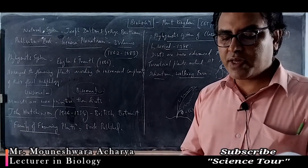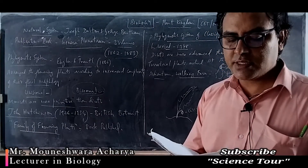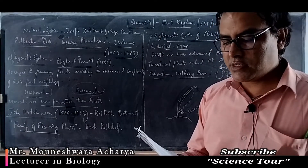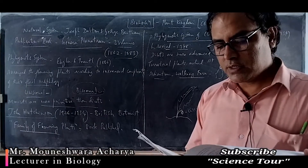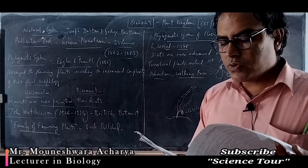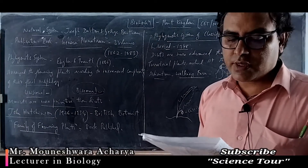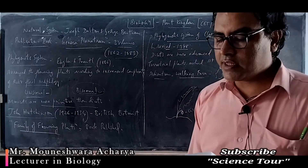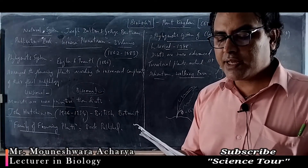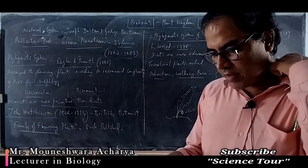Question 5: Fusion of two gametes which are dissimilar in size is termed anisogamy. Anisogamy is the fusion of morphologically dissimilar gametes — the female gamete is usually larger and non-motile, while the male gamete is smaller. Example: seen in Chlamydomonas.